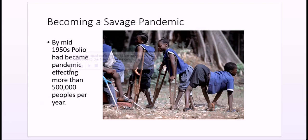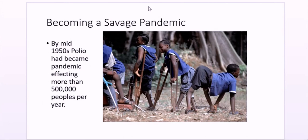By mid-1950, the polio virus had become a pandemic, affecting more than 500,000 people per year.